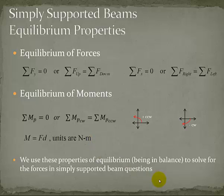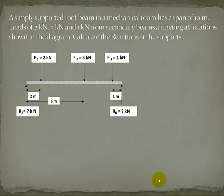So when we're looking at simply supported beams, we're going to use these different properties to solve for any unknown forces. So here's an example. I've got a simply supported beam. I have a load of 2 kilonewtons, 5 kilonewtons, and 1 kilonewton. I have an unknown reaction A on the left-hand side, and an unknown reaction B on the right-hand side. And we want to calculate what are each of these unknown reactions.